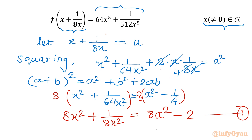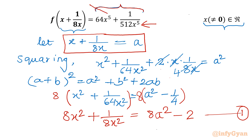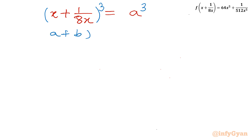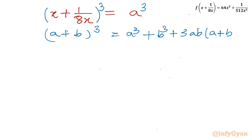Now I will consider our substitution once again, and this time I will calculate the cube, since we require x⁵ in the RHS. Let us cube both sides of x + 1/8x = a, giving (x + 1/8x)³ = a³. The (a+b)³ formula is a³ + b³ + 3ab(a+b). So expanding: x³ + 1/512x³ — since 8³ = 512 — plus 3·x·(1/8x)·(x + 1/8x).